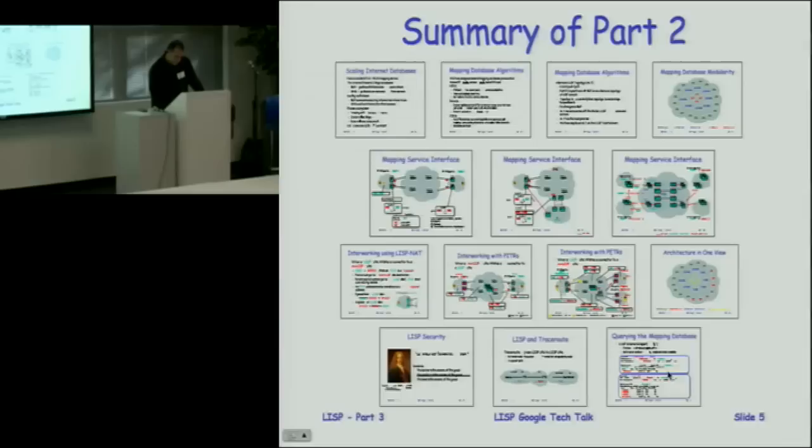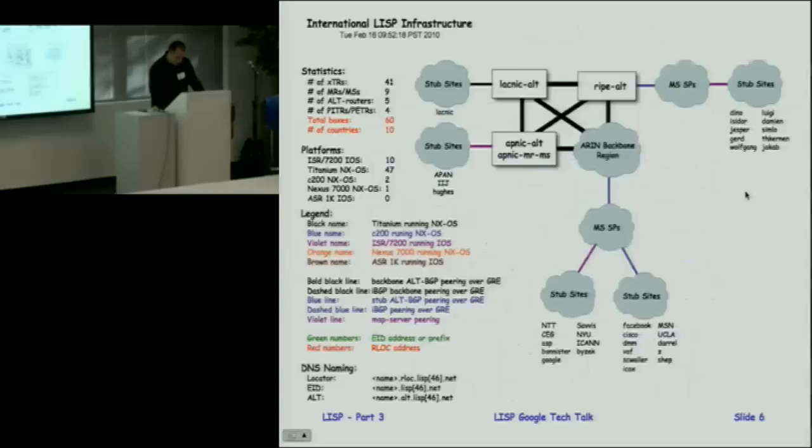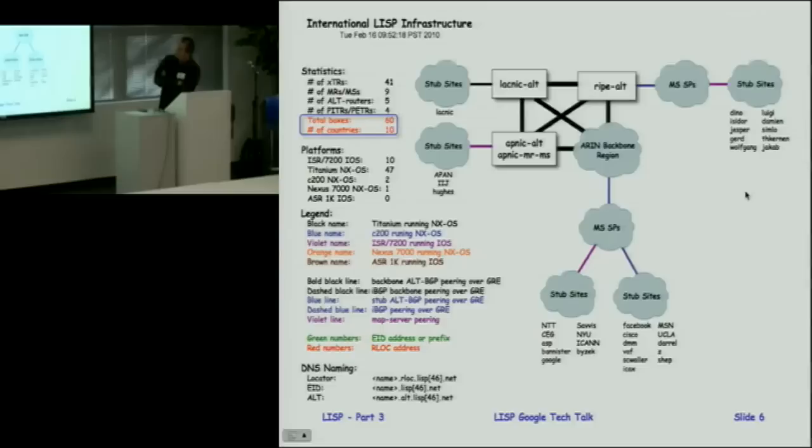Let's talk about the LISP pilot network — we call it the LISP test network. It's quite real; we're doing a lot of experiments on it. The point is that we're trying to build it out, not get terribly large, but just enough to show some kind of internet structure on top of the existing internet. We have about 60 boxes deployed now in 10 different countries.